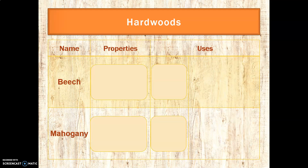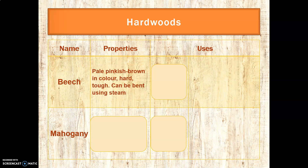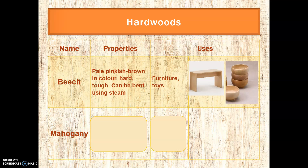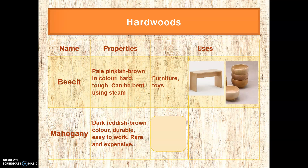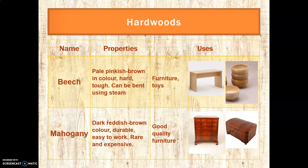Our next two hardwoods: beech is pale pinky-brown in colour, quite hard and tough, and it can be bent using steam. It's really good for furniture, toys, and decorative bowls. Last we have mahogany, which is a very dark, reddish-brown colour. It's very durable and easy to work, taking a shape really beautifully. It's becoming rarer and so it's very expensive, basically used for good quality furniture, boxes, and trinkets.